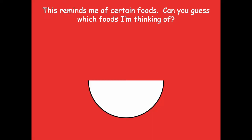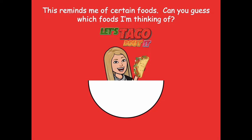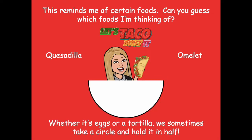This shape reminds me of certain foods — can you guess which ones? Let's taco about it! It reminds me of a taco, like the shape of a taco shell. What are some other foods that look like this shape? Has anybody ever had a quesadilla? It's got cheese, sometimes chicken, and it's folded in half. And an omelet — you have eggs, cheese, veggies, and meats, and they just fold it in half. Whether it's eggs or a tortilla, we take a circle and fold it in half. A quesadilla, an omelet, and a taco can all start flat, then fold in half.